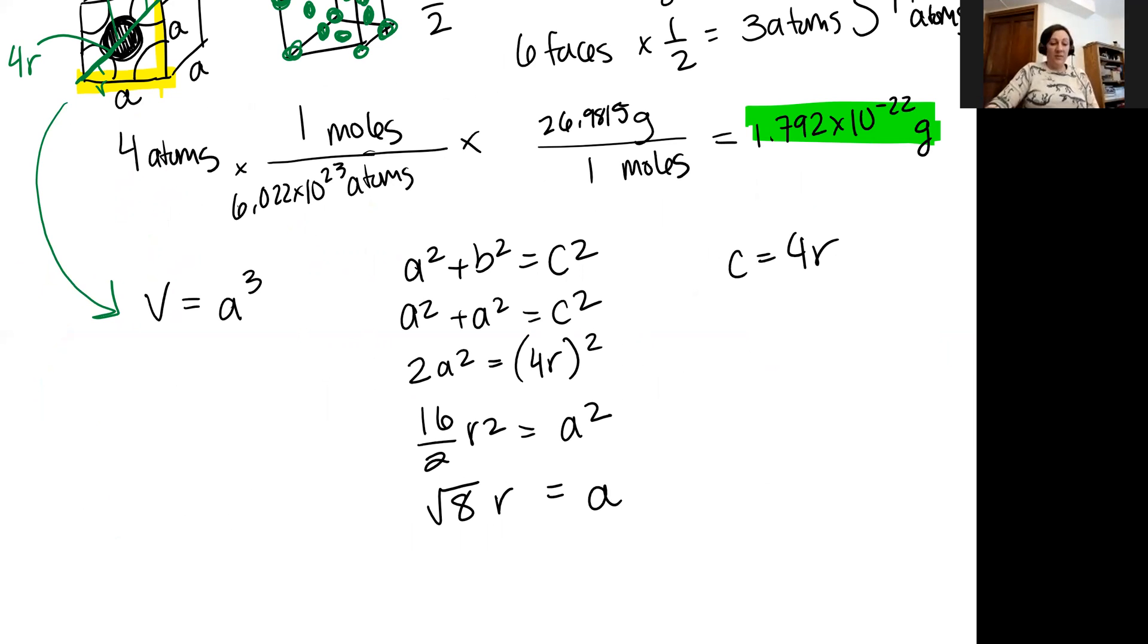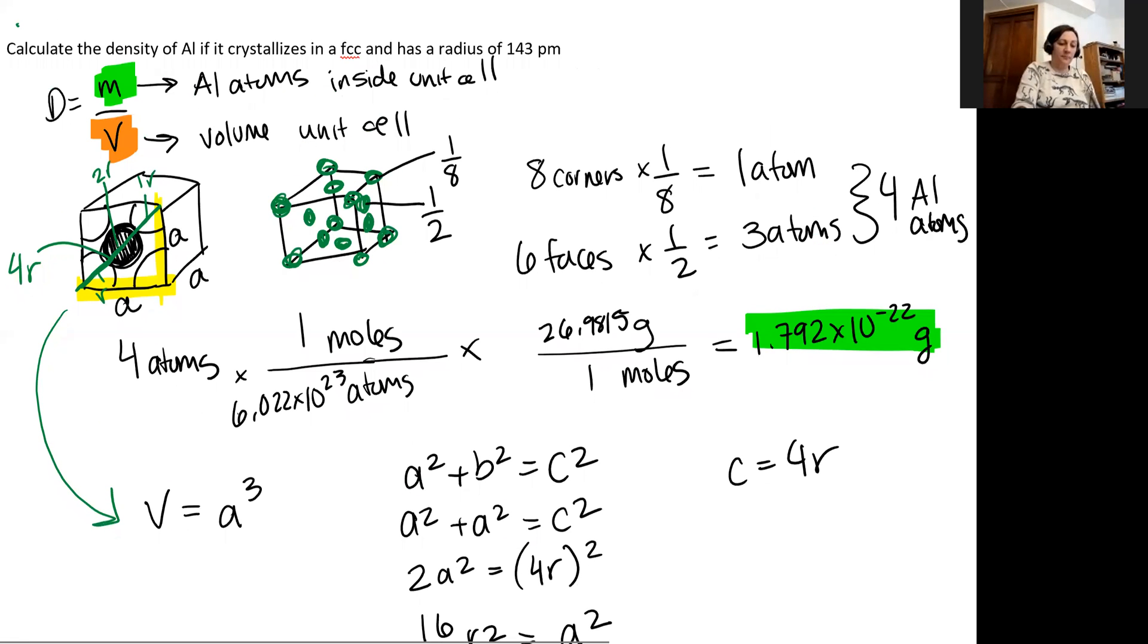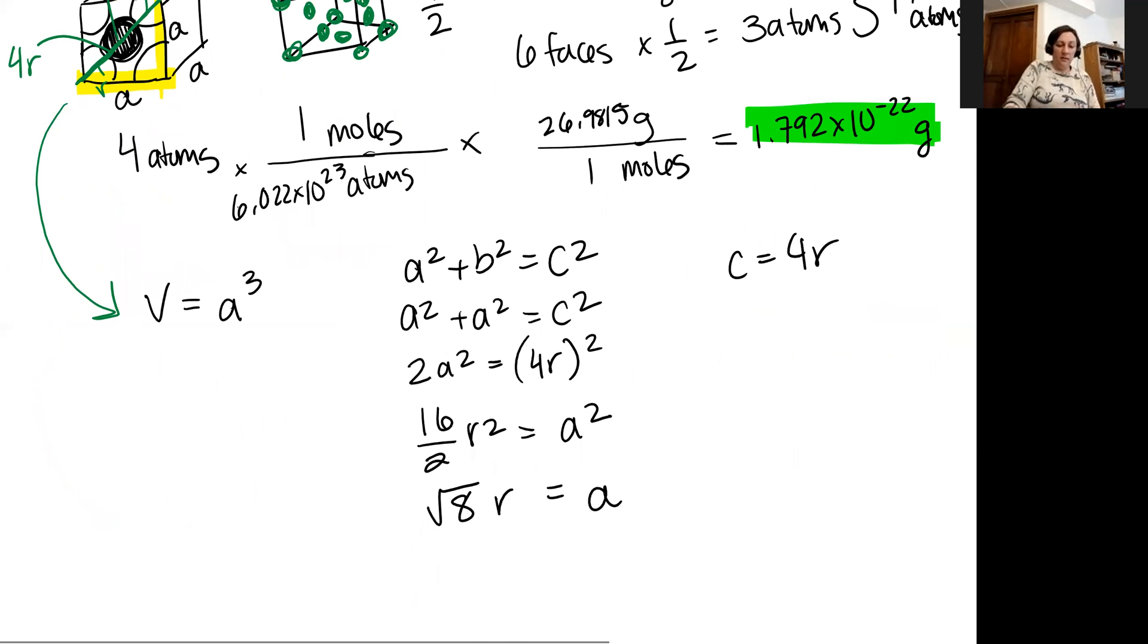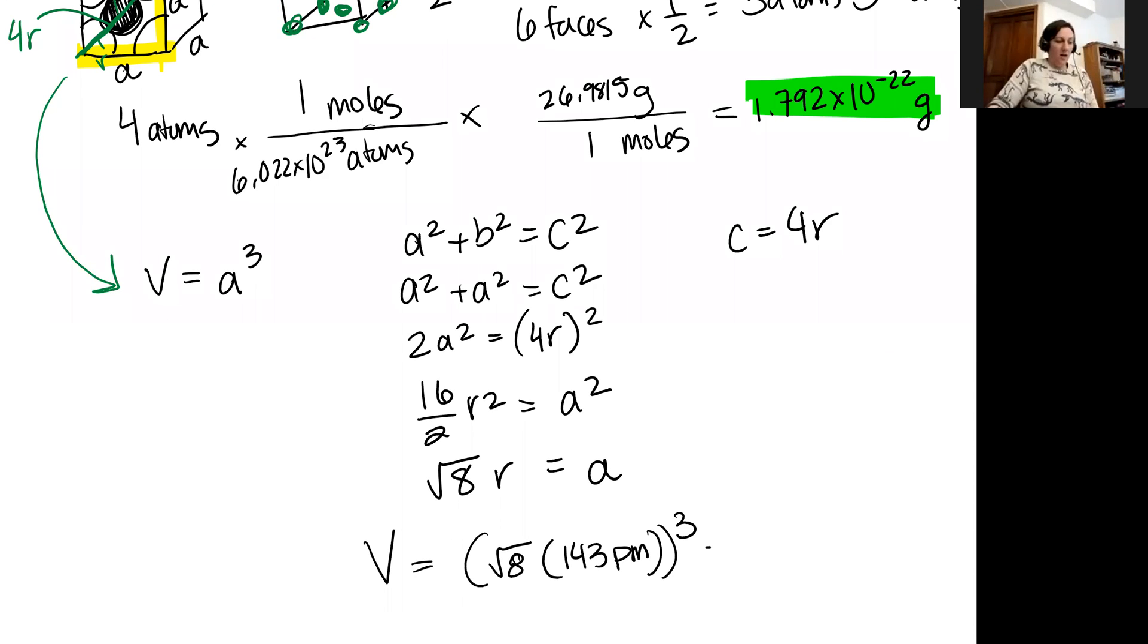And I know my radius. My radius was given to me as, if we come back up, 143 picometers. So I'm going to plug that in. I'm actually going to plug this just into my volume equation. So my volume is going to be equal to that square root of eight times R, which is 143 picometers. And that whole thing is cubed because it'll be A times A times A, length times width times height. So plugging that value in, I'm actually going to get my volume of my unit cell, which is 6.6167 times 10 to the 7th picometers.